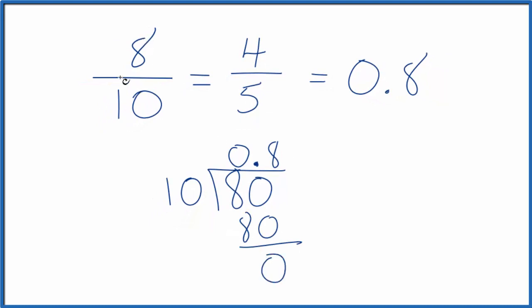So we could say that 8 tenths is equivalent to the decimal 0.8, as is 4 fifths. Not surprising, that's what we found on our calculator.